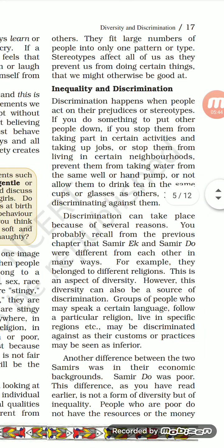Discrimination can take place for several reasons. You probably recall from the previous chapter that Samir Ek and Samir Do were different from each other in many ways. One Samir is from a different background and both had different qualities, but people have a mindset — because he belongs to a Muslim or Hindu background, they are like that — which is not right. Belonging to a different religion does not make anyone inferior or superior; this is an aspect of diversity.